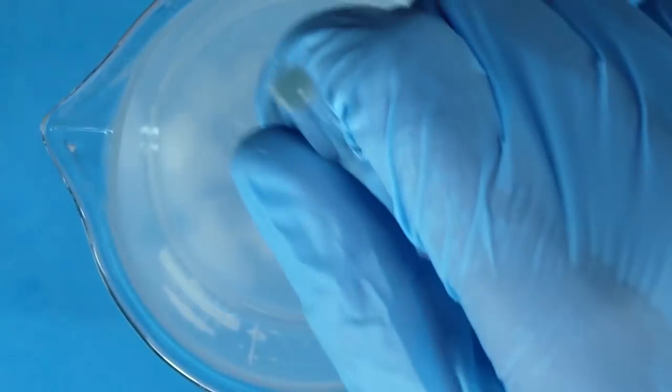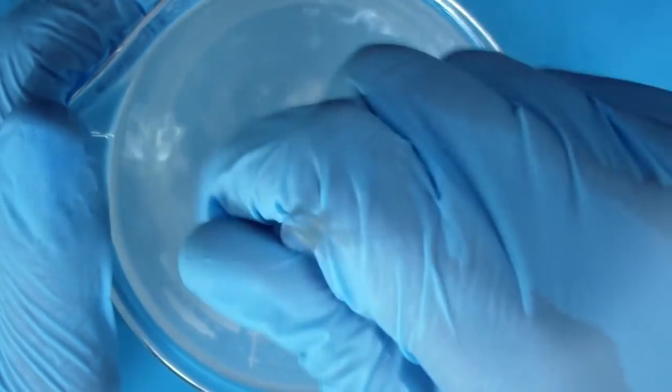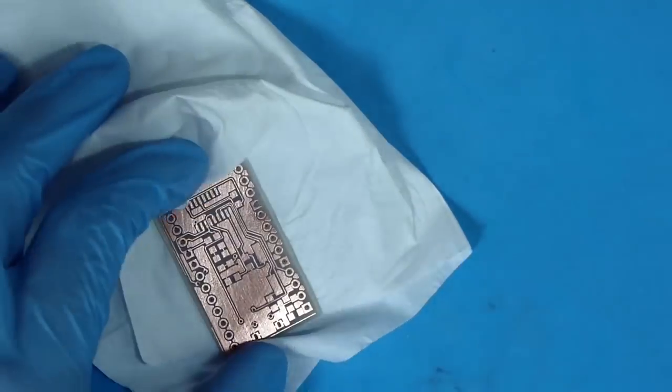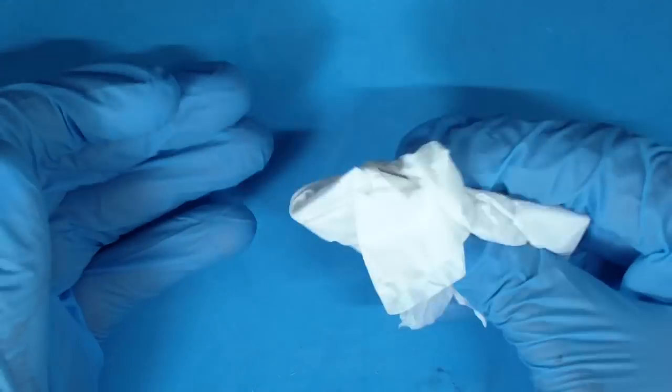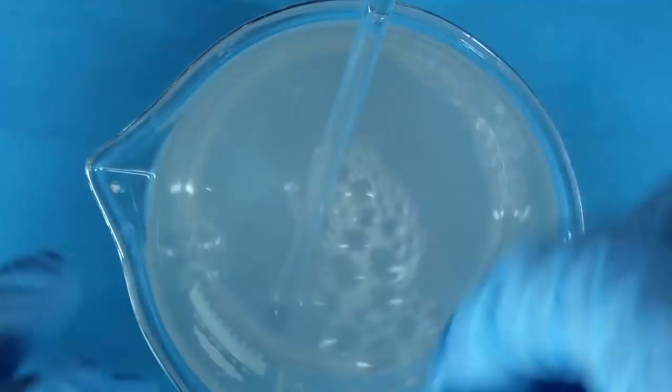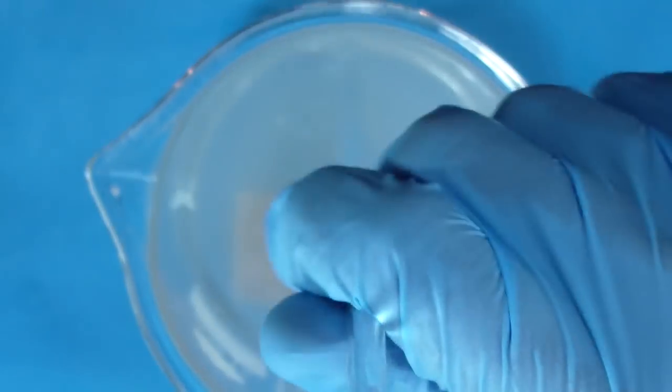Okay now let's finish this PCB. We have tinning solution ready here. We will immerse the PCB inside and let's see what happens. Before this process make sure your PCB is clean and shiny like a piece of gold.